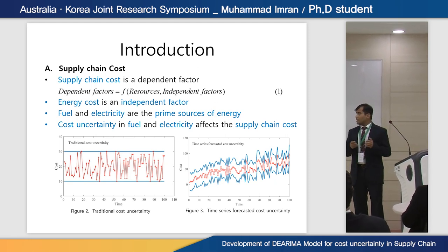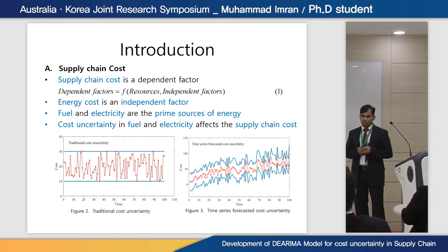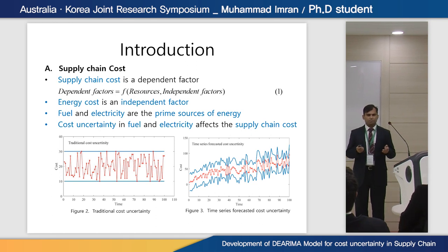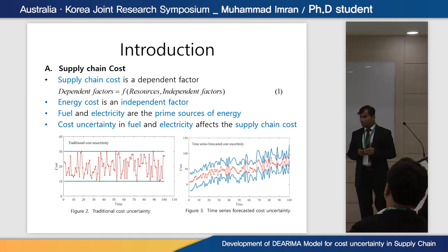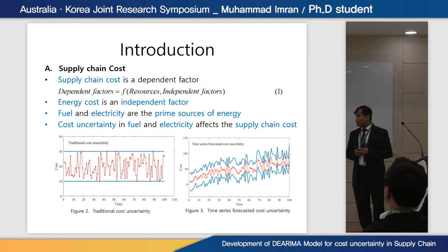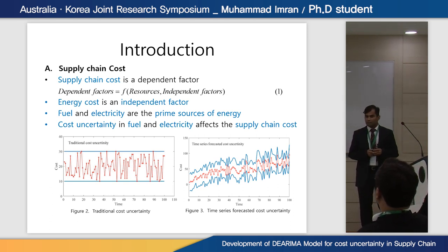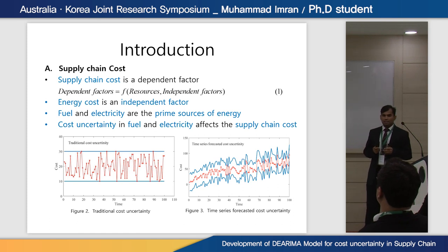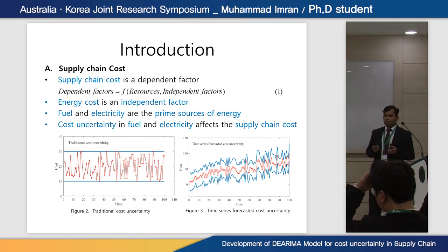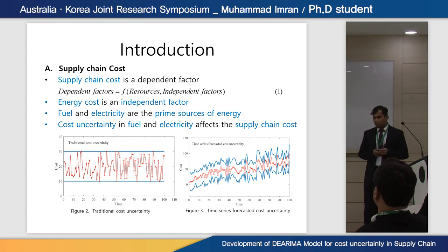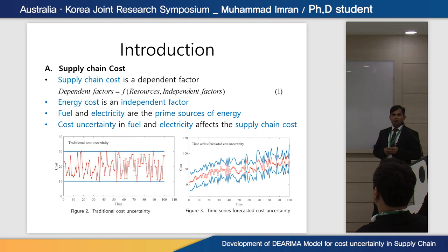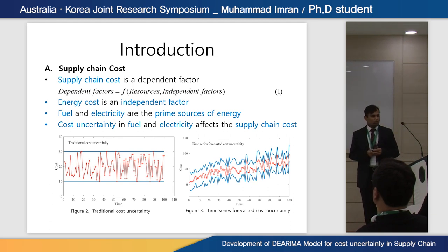Supply chain cost is a dependent factor, and a dependent factor is a function of resources and independent factors. Traditional literature focused on controlling resources for managing the dependent factor. However, in this research we are focusing on both resources and the independent factor. Energy cost is an independent factor; fuel and electricity are the prime sources of energy, so their cost affects total supply chain cost.